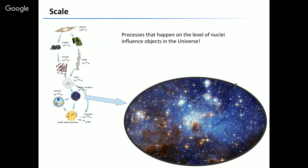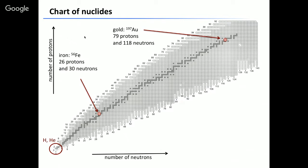What I will be talking about are processes that happen on the level of the atomic nucleus — that's 10 to the negative 14 of a meter, a very small object we can't really see. What happens on the scale of the atomic nucleus actually governs what happens in the whole universe, deciding processes on the scale of our galaxy, which is 10 to the 20 meters. To describe the nuclear physics behind heavy element production, I'll use the chart of nuclides.